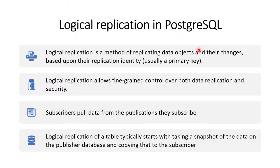So what is logical replication in PostgreSQL? Logical replication is one of the ways of replicating the data and its associated changes from one database to another database. The databases may be on the same host or different hosts. We are talking about tables where individual rows are identified using the primary key, so any changes happening on the table will be replicated from one database to another.